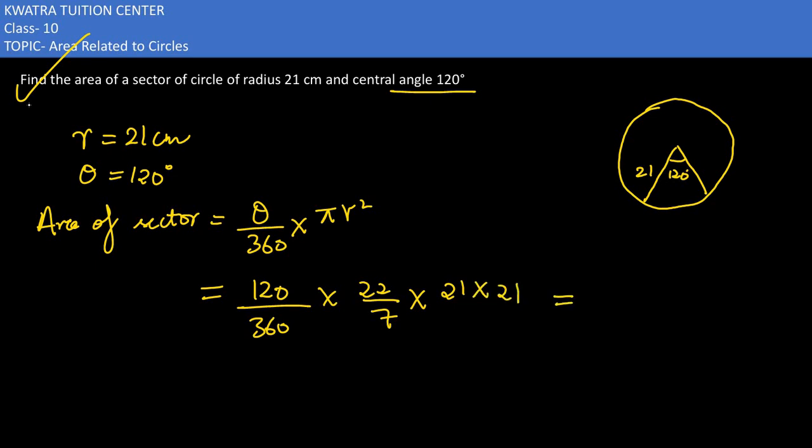So what value you would get here? 0 can be cancelled with 0, 12 can be cancelled with 36, so you would get 1 over 3. 7 को 21 से cancel करो, you would get 3, 3 से हम 3 cancel करेंगे. So we would be left with 22 into 21.